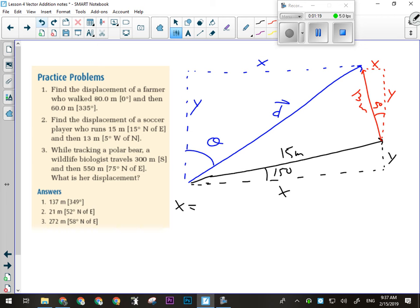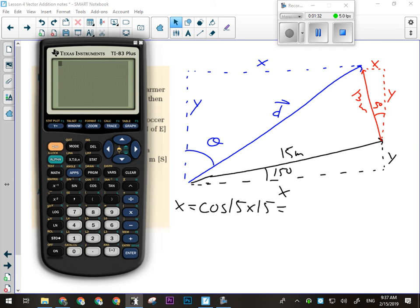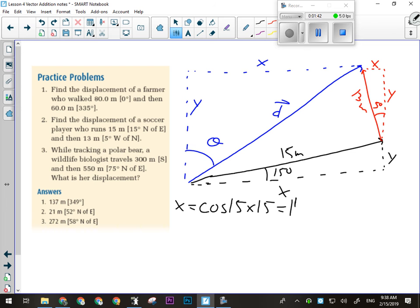So the x for that one is the adjacent side. So in that case, I will use the cos of 15 degrees times 15 meters. All right, so we got 14.489 meters, and that is east. I always put direction on my components so that I know when I'm finding the resultant whether I need to add or subtract.